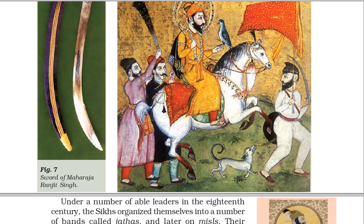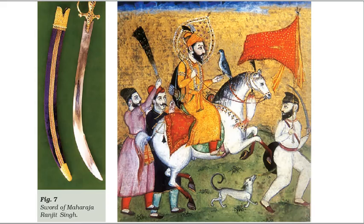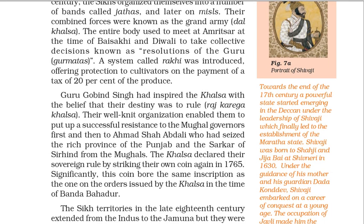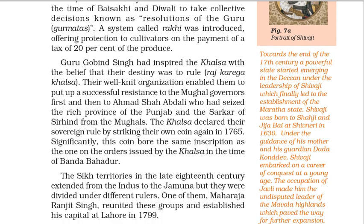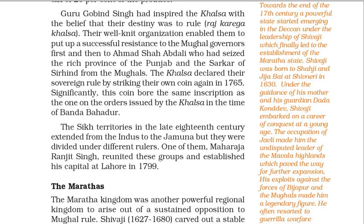Under a number of able leaders in the 18th century, the Sikhs organized themselves into bands called Jathas, and later Misls. Their combined forces were known as the Grand Army — Dal Khalsa. The entire body used to meet at Amritsar at the time of Baisakhi and Diwali to take collective decisions known as Resolutions of the Guru — Gurmatas. A system called Rakhi was introduced, offering protection to cultivators on the payment of a tax of 20% of the produce. Guru Gobind Singh had inspired the Khalsa with the belief that their destiny was to rule — Raj Karega Khalsa. Their well-knit organization enabled them to put up a successful resistance to the Mughal governors first, and then to Ahmad Shah Abdali, who had seized the rich province of Punjab and the Sarkar of Sirhind from the Mughals. The Khalsa declared their sovereign rule by striking their own coin again in 1765, which bore the same inscription as the one on the orders issued in the time of Banda Bahadur.